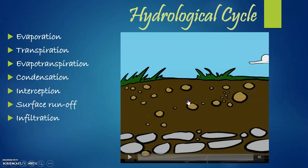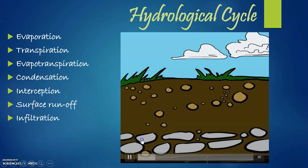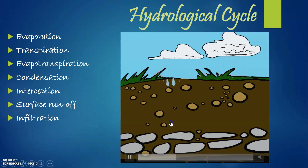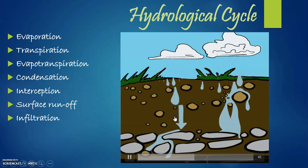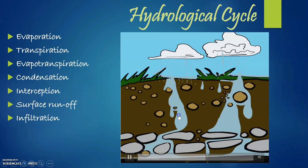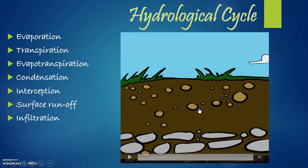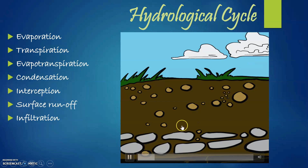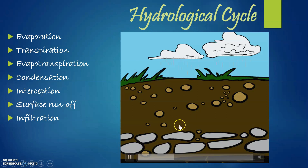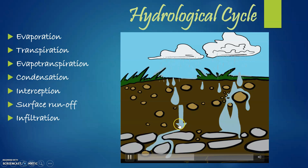The next feature is infiltration. When water seeps into the ground — whether from rainfall or the melting of glaciers — the water that penetrates into the soil or seeps underground is called infiltration. It is mainly the seepage of water into the soil, as you can see clearly in the picture.